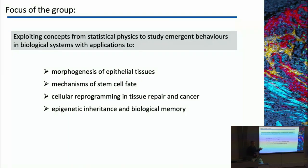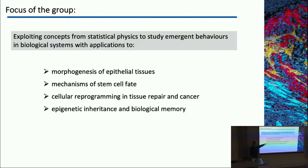We have a number of different projects. We're very interested in the morphogenesis of epithelial tissue types, branching morphogenesis and so on. For a long time, we've been very interested in mechanisms of stem cell fate. Most of our experimental work is targeted at the phenomenon of natural injury-induced cellular reprogramming and how those programs are subverted in cancer.